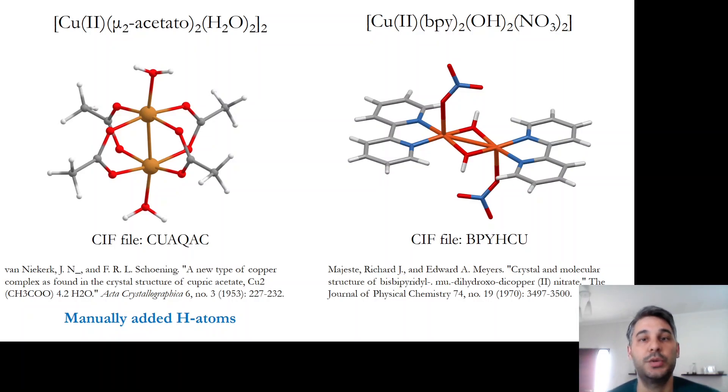For this, geometry optimizations are necessary, especially for the copper acetate structure. Because as you can see here, the crystal structure I used was from 1953 and it didn't have the hydrogens. So it's possible that this structure was not really very good and that will result in a structure that's not really close to a minimum. For the copper hydroxobipyridine complex, the structure is better and there's not that much of a change between the unoptimized and optimized structures.